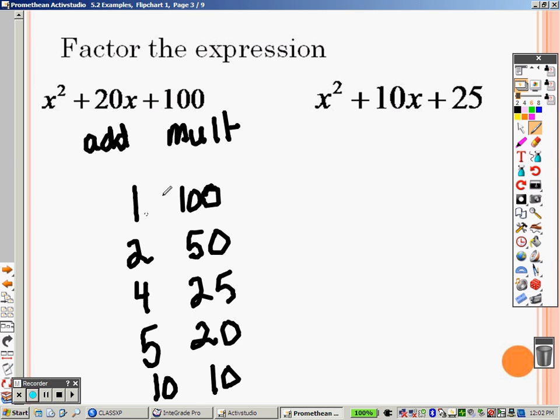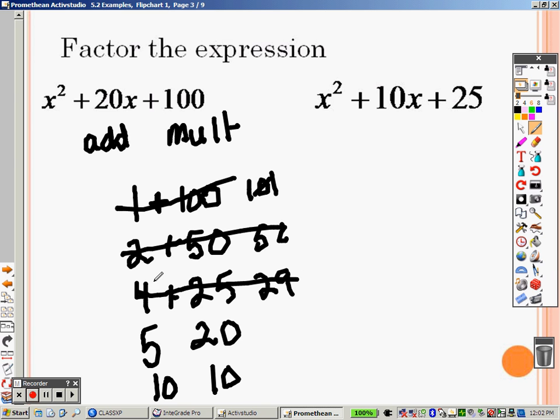Well, when I add those together, that gives me 101, so that doesn't work. When I add those, this gives me 52. No, that doesn't work. When I add those, this gives me 29. No, that doesn't work. When I add those, this gives me 25, and no, that doesn't work. When I add those, however, that gives me 20. That means, hooray, I found my answers.